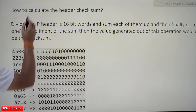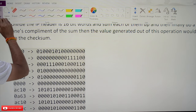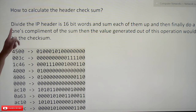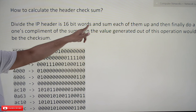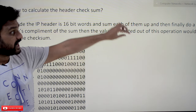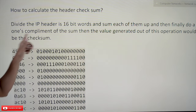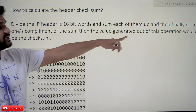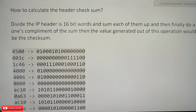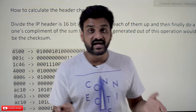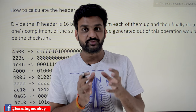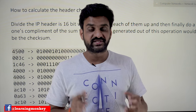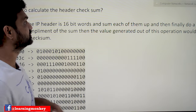Let's understand how the header checksum is calculated. The first step is to divide the IPv4 header into 16-bit words and sum each of them up, then finally do the one's complement of the sum. The value generated out of this operation is the checksum. So the first step is to group the entire IPv4 header into 16-bit groups.